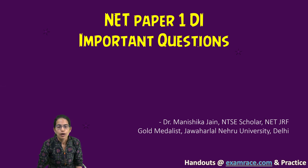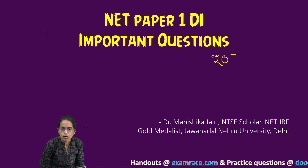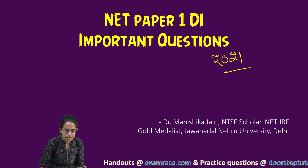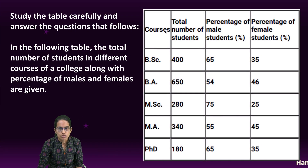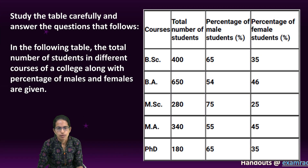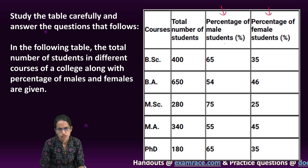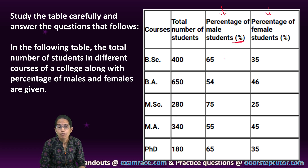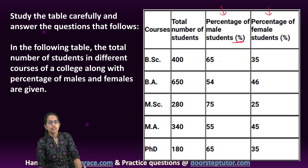In this set, we would talk about two data interpretation questions from the 2021 paper. The first question talks about courses. In the courses, there are number of students, the percentage of male and percentage of female students across all courses are given. But the number of male and female students are not given.